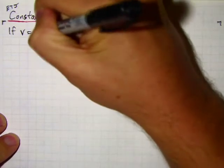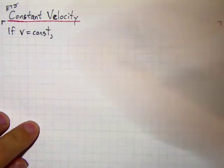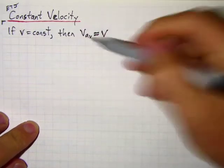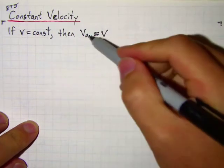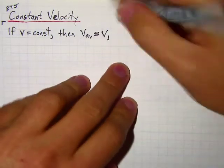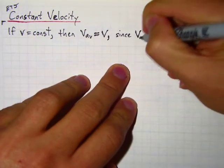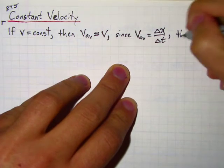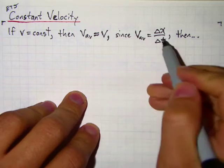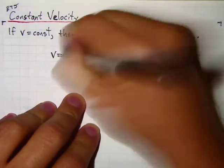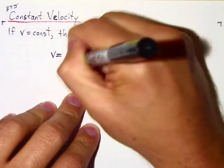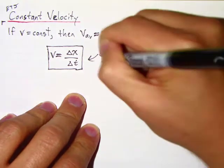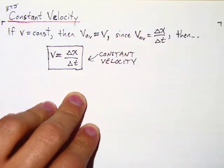If an object is moving with constant velocity, meaning its velocity is not changing, then its average velocity is just equal to its velocity. If it's always moving at say 20 miles per hour, constantly 20 miles per hour, then on average it's moving at 20 miles per hour. Since by definition the average velocity is the displacement over the time, if the average velocity equals the velocity and equals delta x over delta t, then your velocity must equal delta x over delta t. That's what we call our equation for constant velocity — it describes the motion of an object whose velocity is not changing.